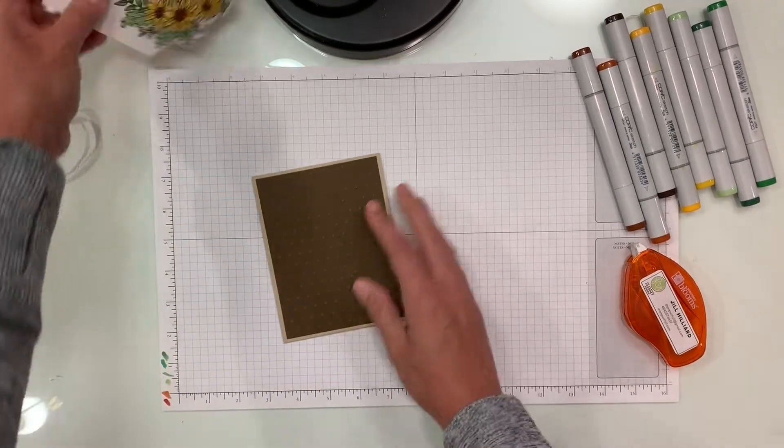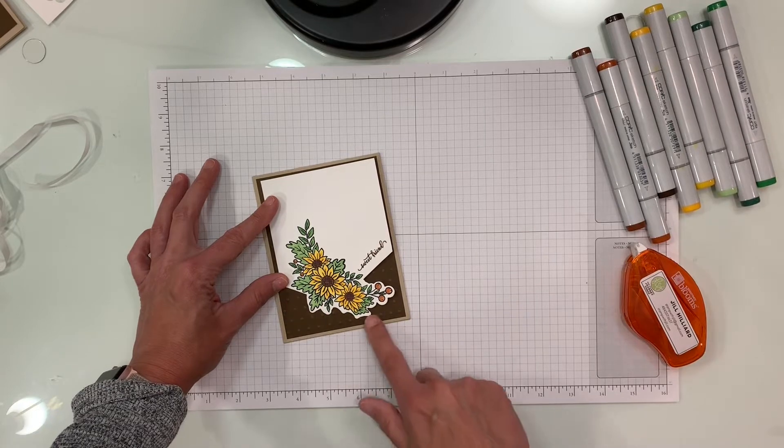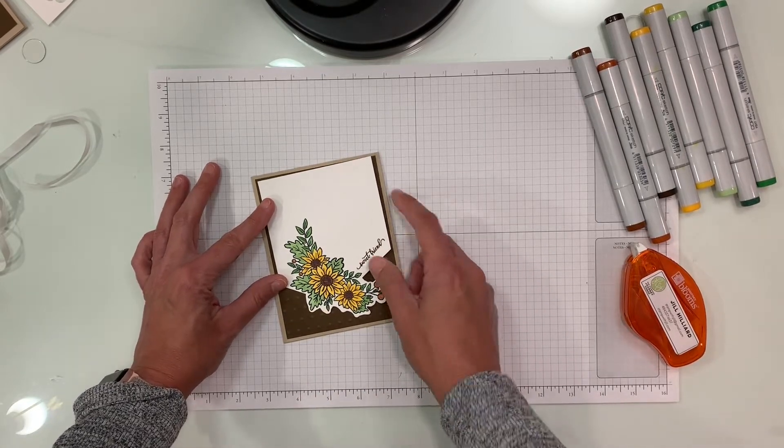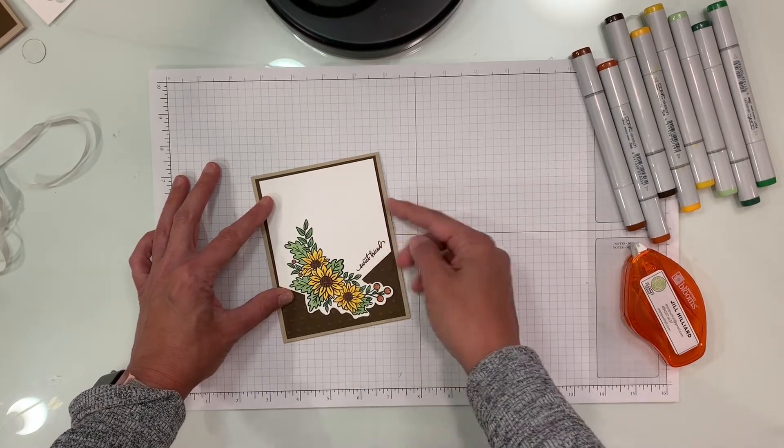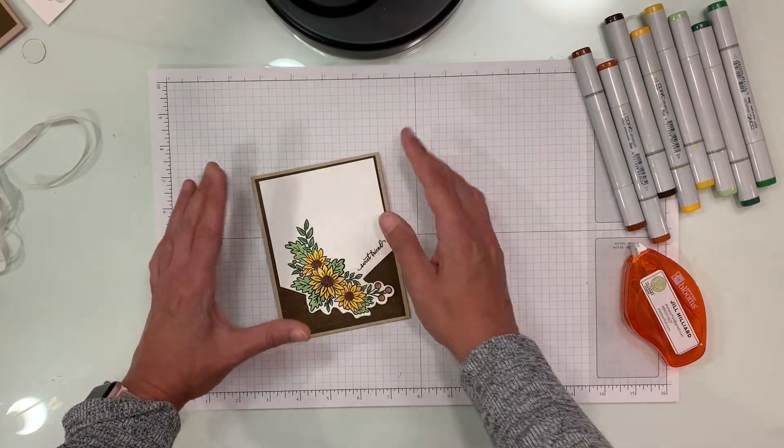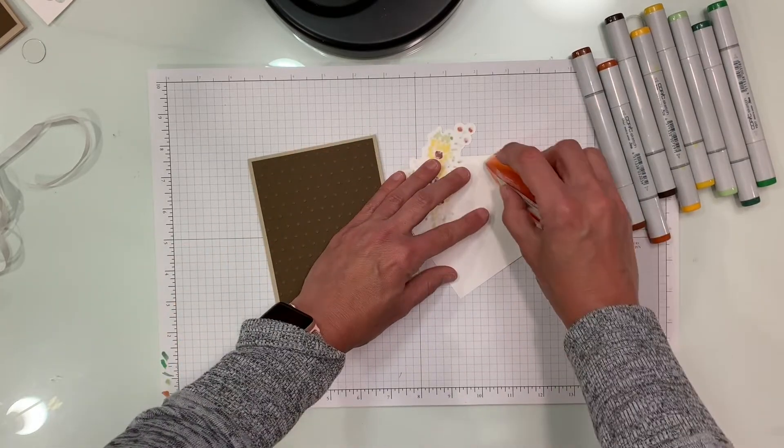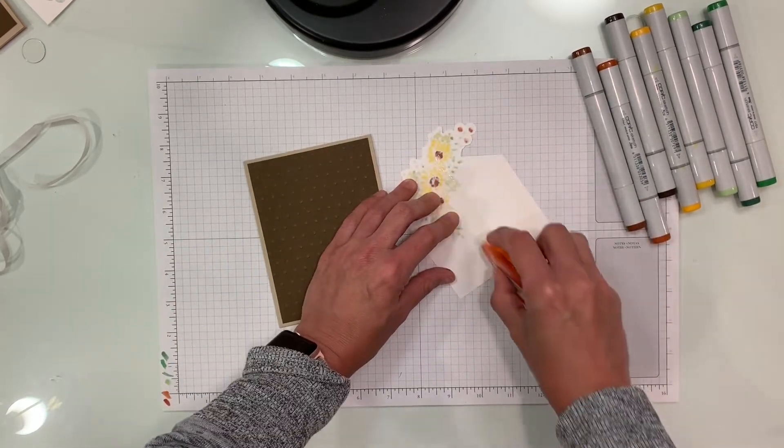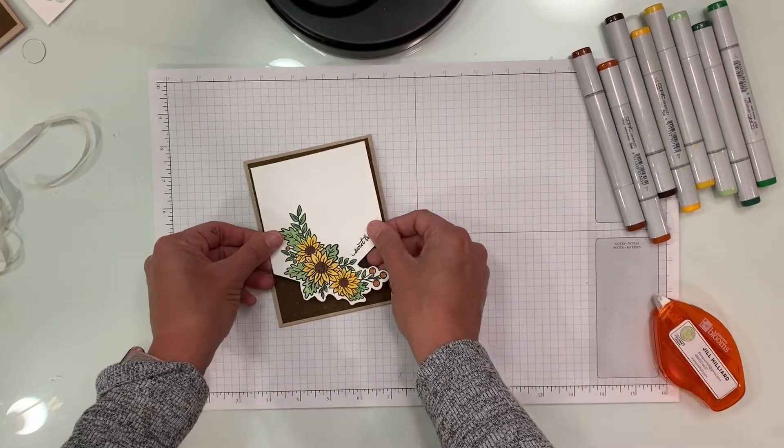Like so. And then what we're going to do is we're going to tape this right here and you can see the partial die cutting takes off the bottom edge and I cut this one just a little bit smaller so it fits. Now if you cut a little bigger, you can always trim to fit your card. You can trim the top.